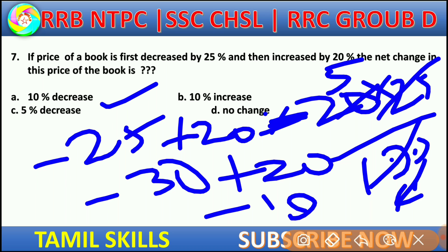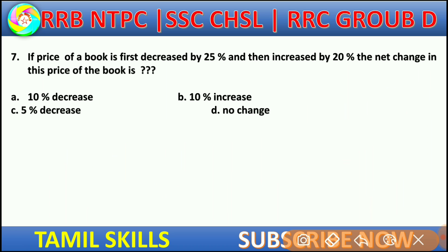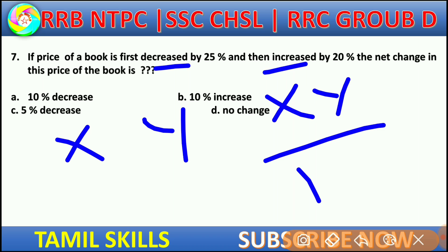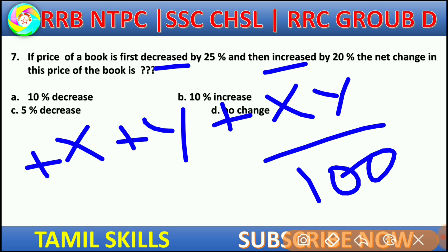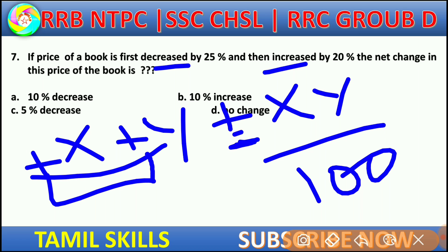To summarize: increase and profit are positive; decrease and loss are negative. The formula is X plus Y plus XY by 100. If both signs are the same (both plus or both minus), the result is positive. If signs differ (plus and minus), the result could be negative.